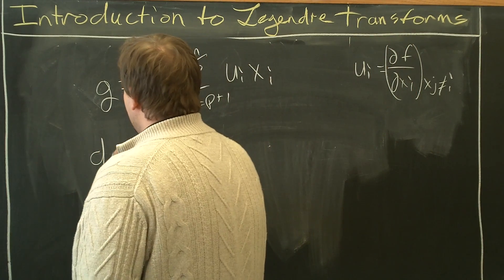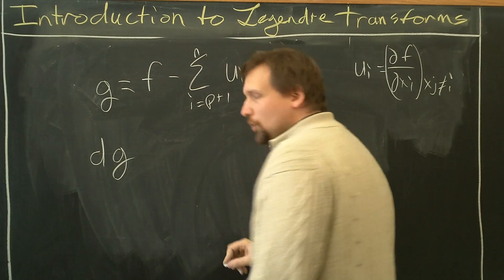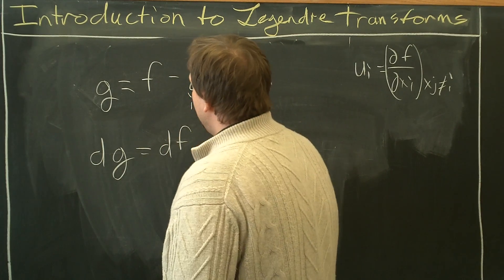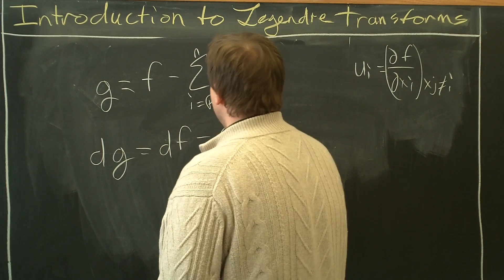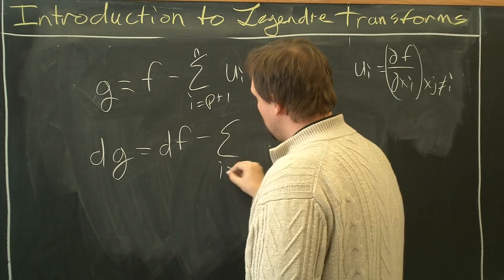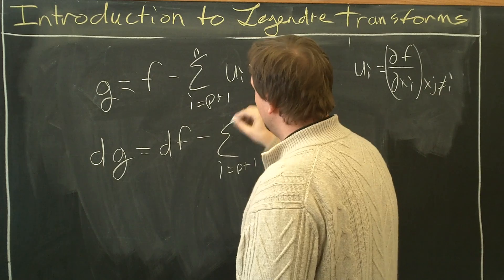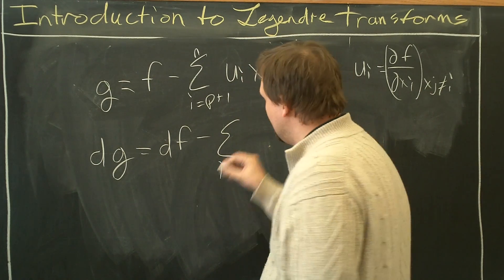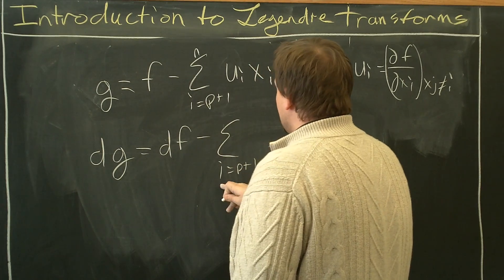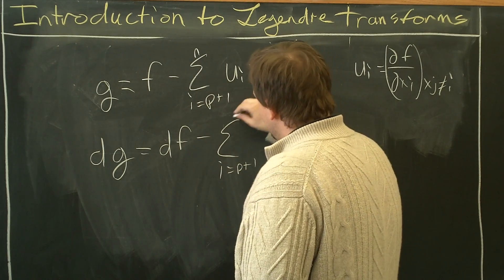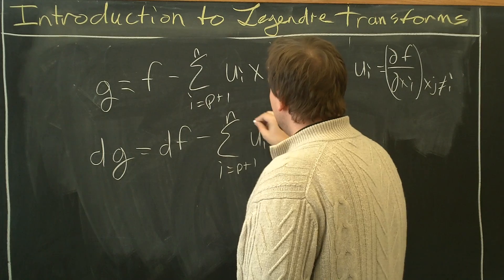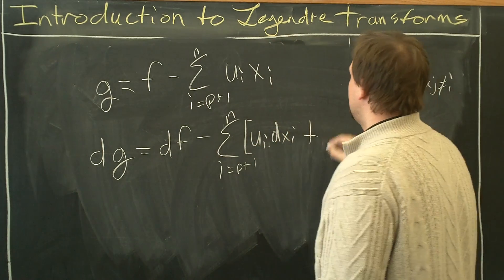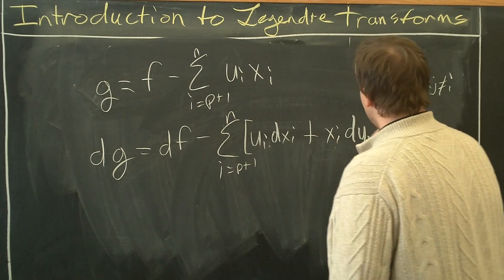The next step in the process is to look at the derivatives of g. What is the derivative of g? The derivative of g equals df minus the sum i equals p plus 1 to n, so a certain number that you want to eliminate the dependency on, of ui dxi plus xi dui.